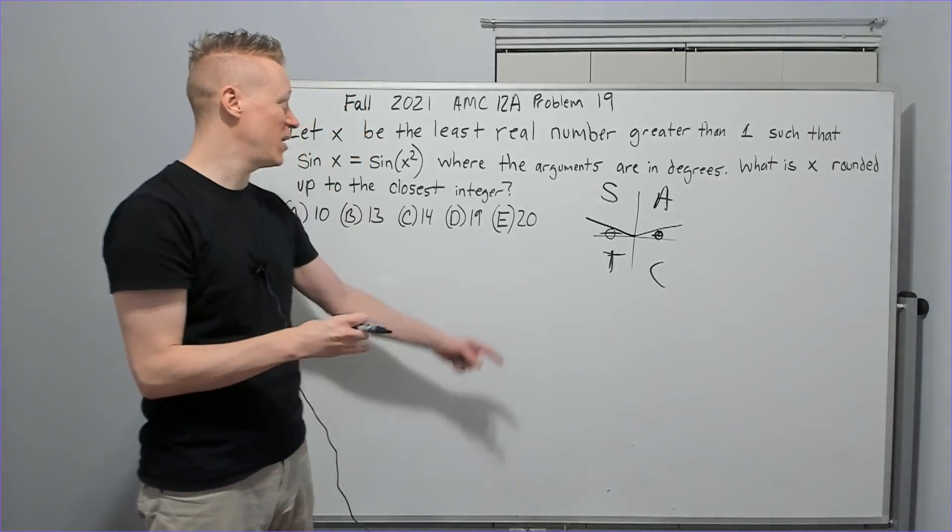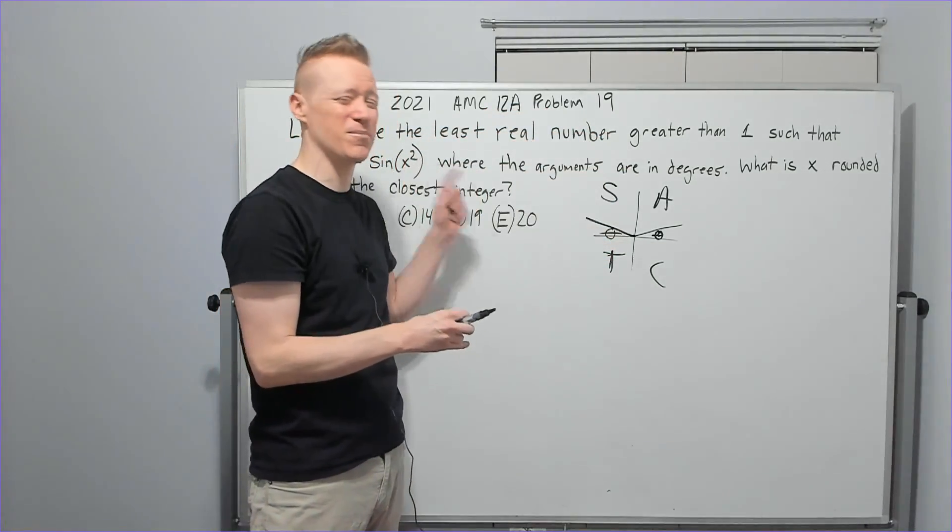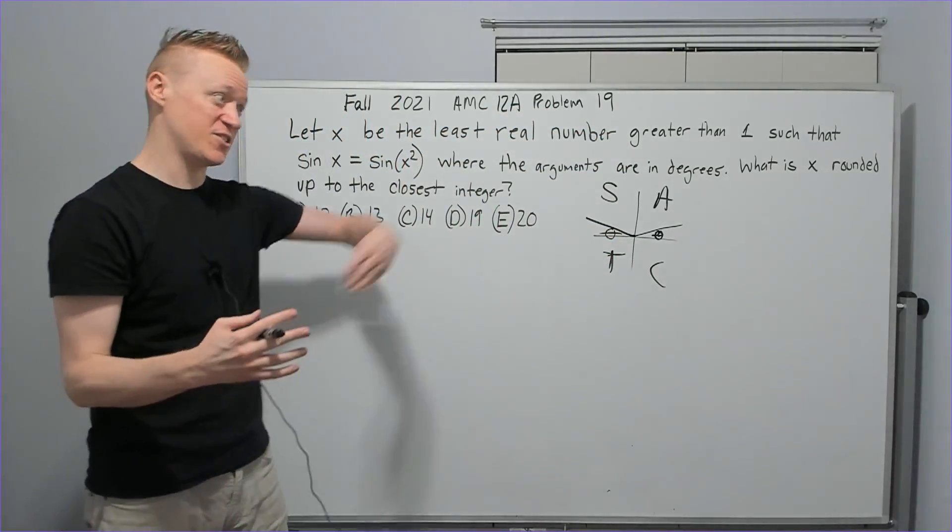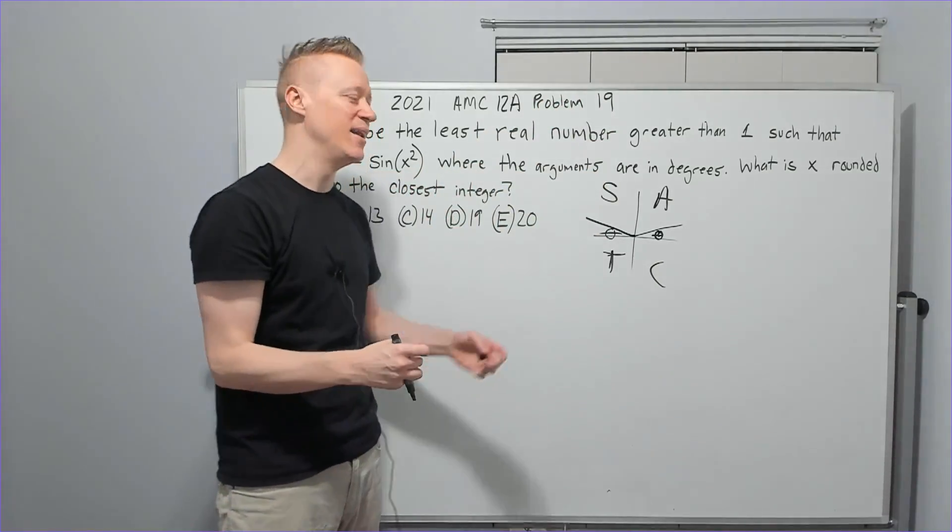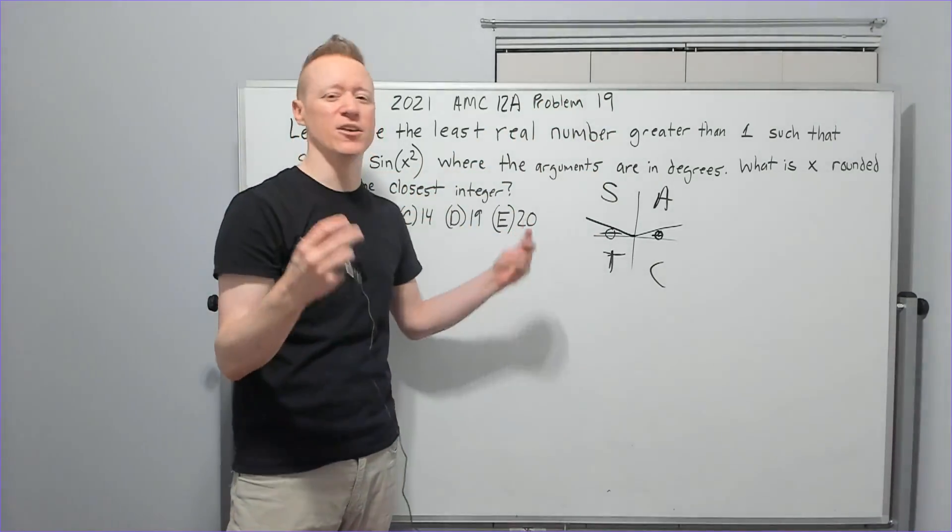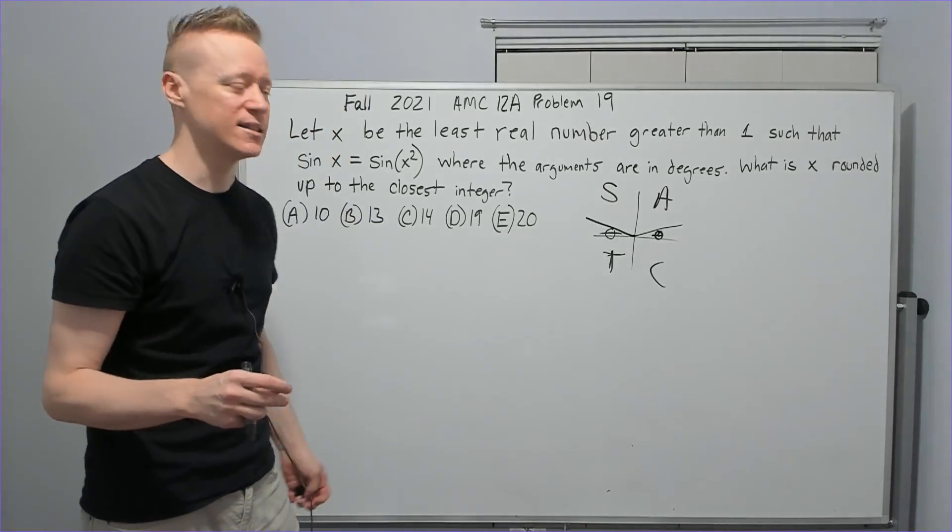If you're taking an AMC 12 and you're getting to number 19, and this is something, I hope you didn't forget it. Maybe you might be so far advanced that this has been so long ago you forgot about it. But this should be something like knowing your times tables as far as trig goes, okay?